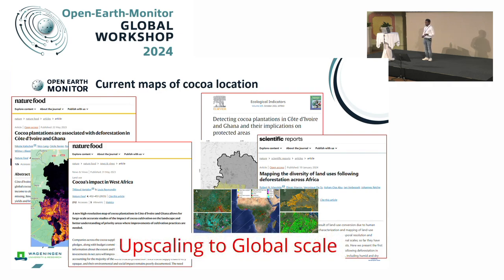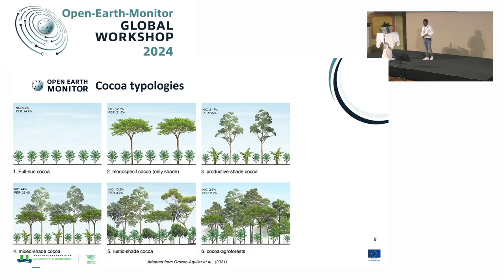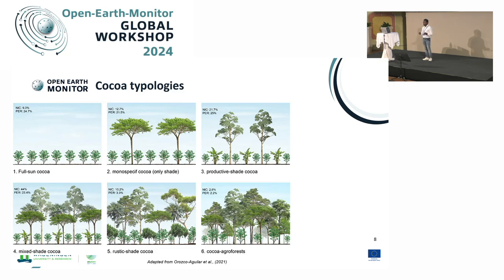The idea here was to upscale to global scale — not only focusing on Africa, but doing the whole pan-tropics. However, the challenge is that cocoa is not a crop which grows as a monocrop. You have different typologies of cocoa farming systems: monocrop, but also cocoa planted along lots of trees, or a mix with other crops. For example, you can find banana plantations also planted together with cocoa and trees, and you can have different densities of trees in agroforestry systems.